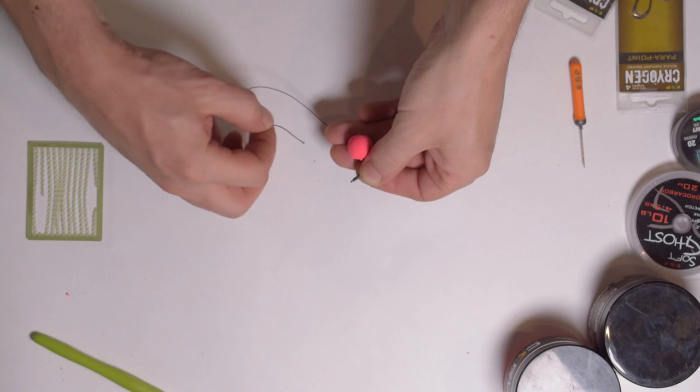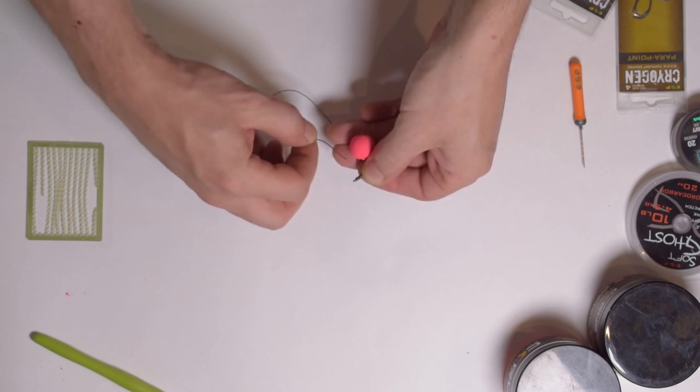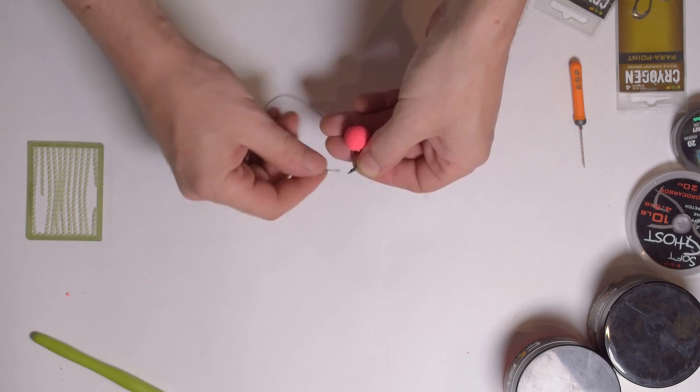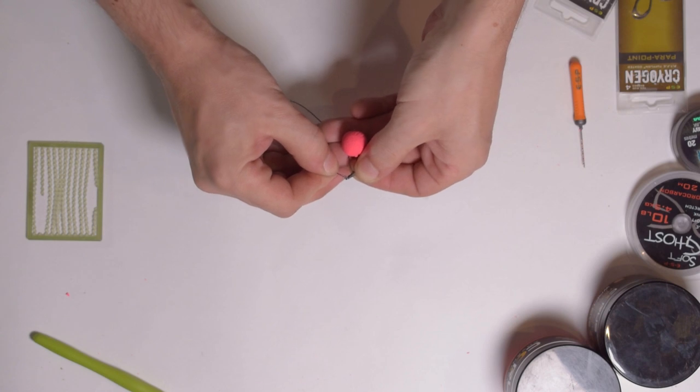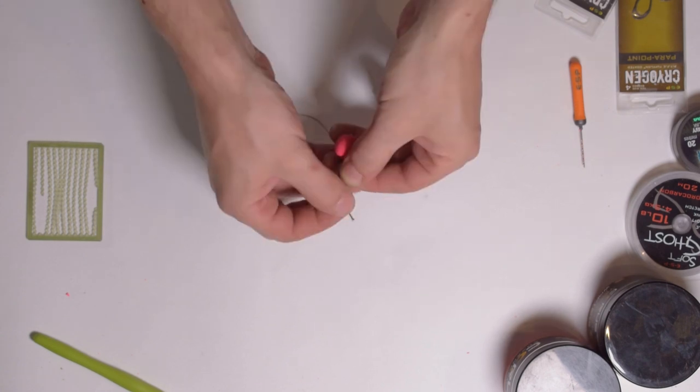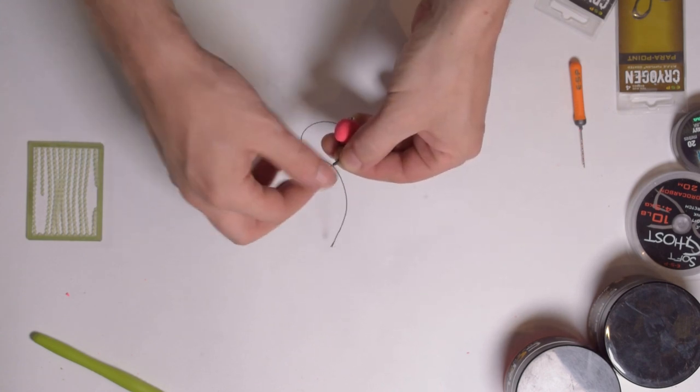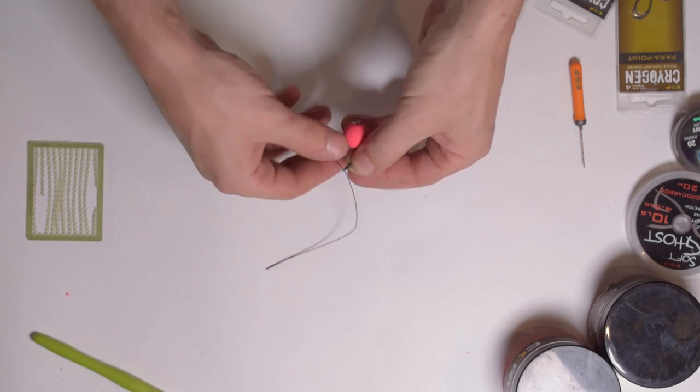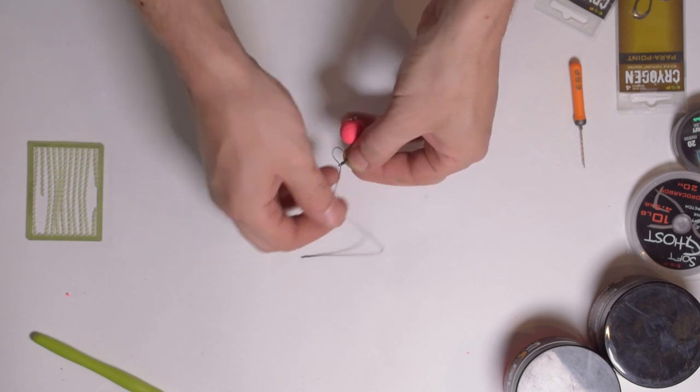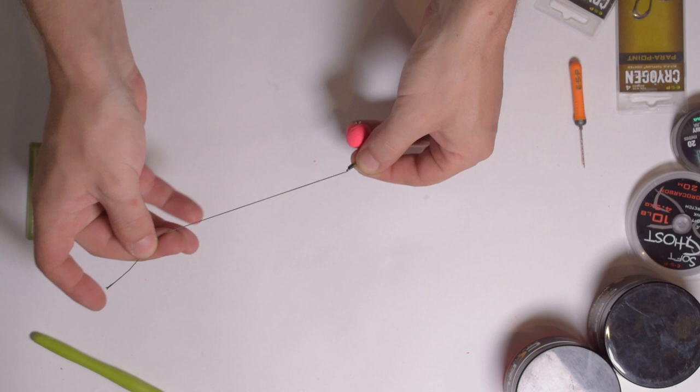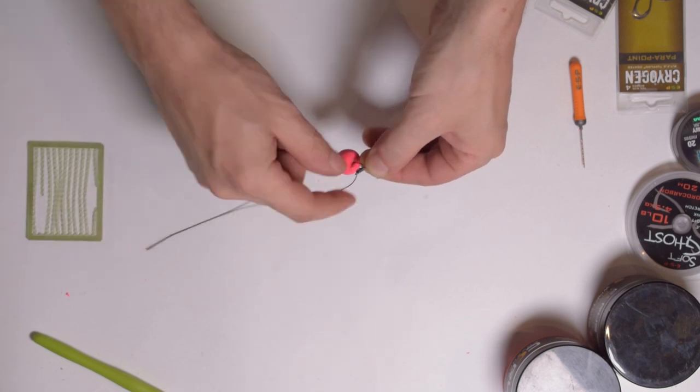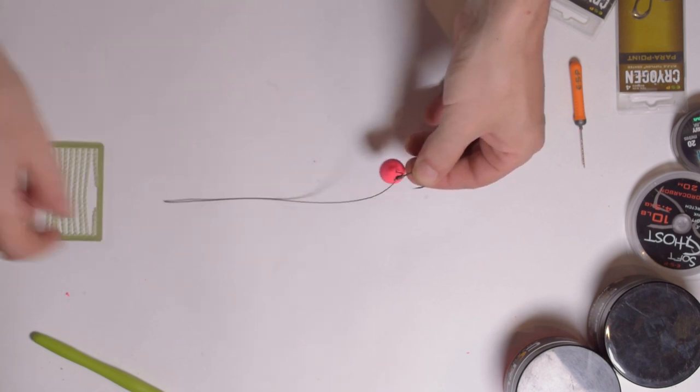Now what you wanna do, you wanna get your hook link and you wanna stick that hook link through the back of your carp hook. Like this. And then we'll pull it up like that. And now you've created your first rig. Look at what we've created.